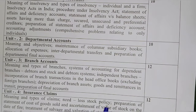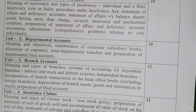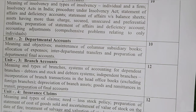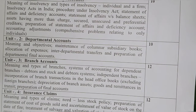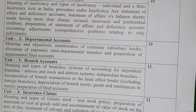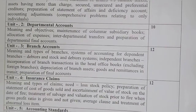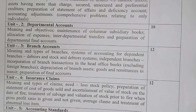Unit number four is Insurance Claims, covering the meaning and types of claims, loss of stock policies, preparation of statement of cost of goods sold, calculation of value of stocks on the date of fire, treatment of salvage and valuation of stock prior to fire when the gross profit ratio is given and when it is not given, the average clause, and treatment of abnormal loss items.